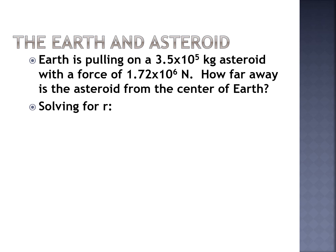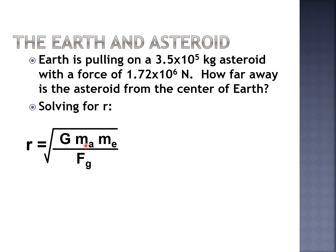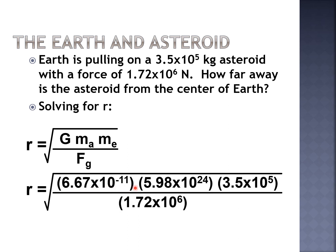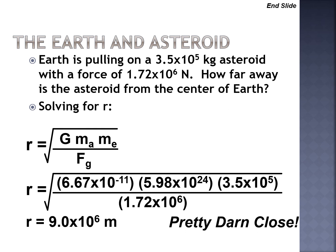The next example: Earth is pulling on a 3.5 × 10⁵ kg asteroid with a force of 1.72 × 10⁶ newtons. How far away is the asteroid from the center of the Earth? Solving for r, we rearrange to get r² = G × m₁ × m₂ / F_g, then take the square root of both sides. Plugging in: G = 6.67 × 10⁻¹¹, the masses are 5.98 × 10²⁴ kg and 3.5 × 10⁵ kg, and the force is 1.72 × 10⁶ N.